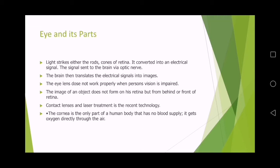The eye lens does not work properly when a person's vision is impaired — the image of an object does not form on the retina but instead in front of or behind it. Contact lenses or laser treatment can correct this. An interesting fact: the cornea is the only part of the human body that has no blood supply — it gets oxygen directly through the air.